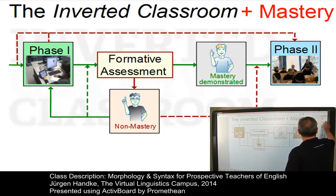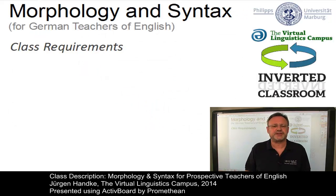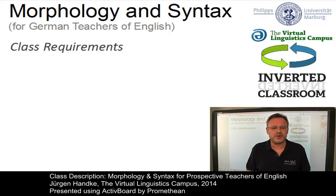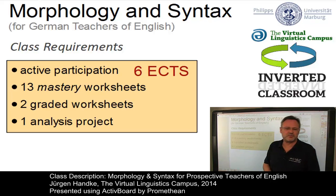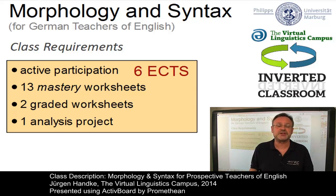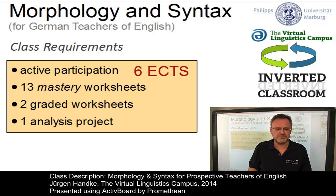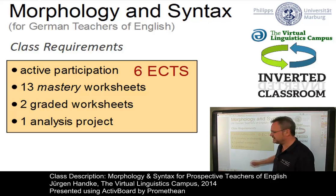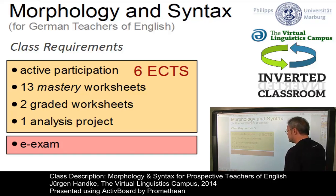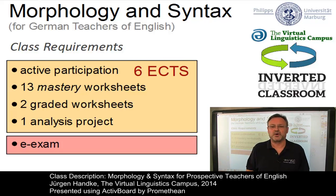Finally, let's talk about the class requirements. The class involves six credits. In Europe, credits are awarded in accordance with the European Credit Transfer System and are referred to as ECTS points, where one ECTS is awarded for a workload of roughly 25 to 30 hours. The six ECTS of our Morphology and Syntax class will be awarded for regular participation and involvement, plus the following: 13 mastery worksheets, two graded worksheets, and one analysis project. In addition, we want you to write a final exam — an electronic exam — or if you are a remote online student, you have to submit a term paper.